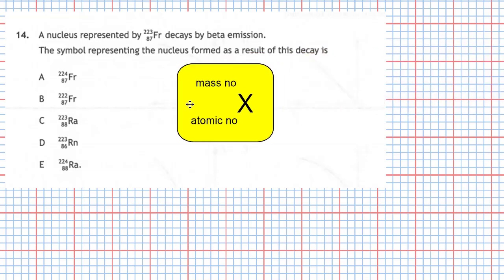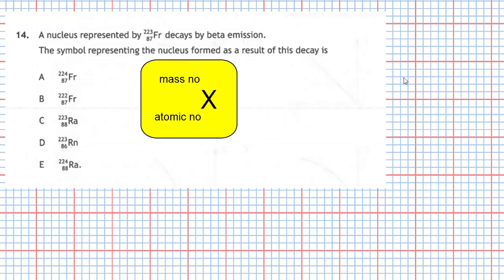For a nuclear symbol, we have the mass number and the atomic number. The mass number is the top number — that's the number of protons and neutrons. The bottom number, in the case of francium 87, is the number of protons in the nucleus.